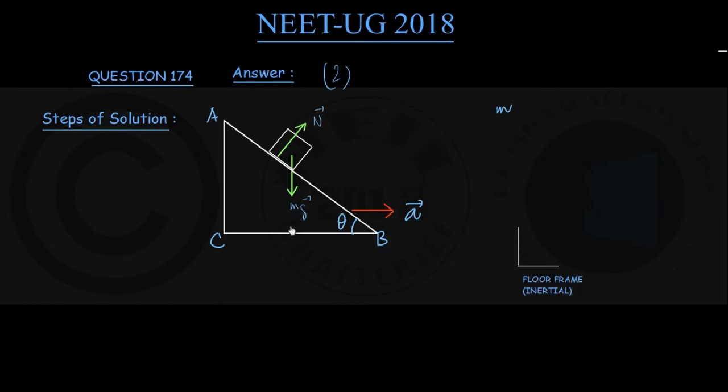Now, since in actual situation this wedge is accelerated with respect to the ground, it is useful now to observe this object, this block, not from the floor inertial frame. I shall take a coordinate system attached to this wedge, that is called wedge frame, and since the wedge is moving in acceleration with respect to the ground, this becomes a non-inertial frame in which, in addition to the real forces, a pseudo force comes into play onto this block.